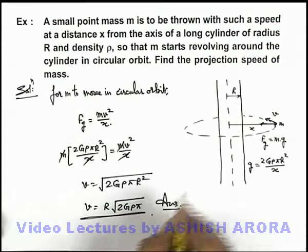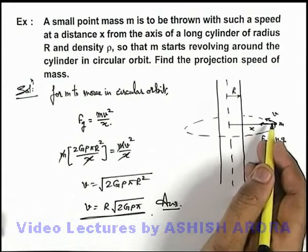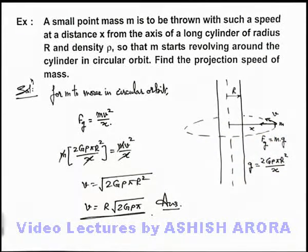Or this is the speed with which a particle is to be thrown such that it will start revolving in the orbit of same radius x from which it is thrown, around the cylindrical body.